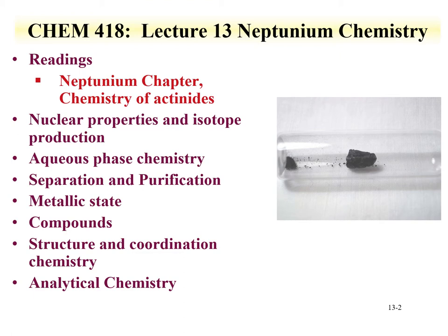We're going to talk about the aqueous phases of neptunium. Multiple oxidation states are present, but we'll see that the plus-five oxidation state dominates. This plus-five oxidation state is similar to the uranyl insofar as you have a linear cation with two oxygens, like the uranyl. This one will be the neptunium. We're going to talk about the separation and purification of neptunium, and we're going to see that the oxidation state plays a role in the separation and purification.